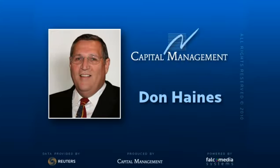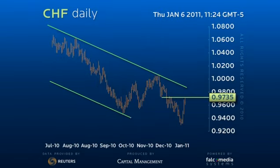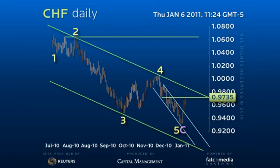Good day and welcome to the Daily Perspective for Dollar Swiss. Often the simplest wave counts are the correct ones. Wave 2 in this decline from 117.30 was a complex irregular flat pattern that ended at 106.25.